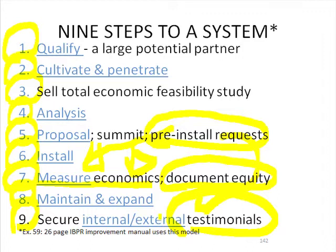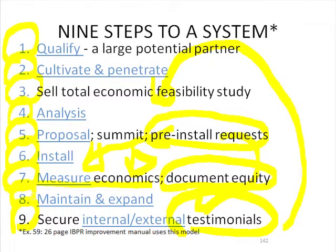What will happen is we can go back next year and do the same thing, because over the year things have changed — people, whatever. So this is a process we have to continue with core accounts, target accounts, and even big losing accounts, because with big losing accounts we'll come out, do an analysis, and suggest quite a redo in how we do business together. As a footnote, go to my website at Exhibit 59 — there's a 26-page tutorial on inter-business process relationship improvement, and I use these nine steps to organize a lot of the material in that tutorial.